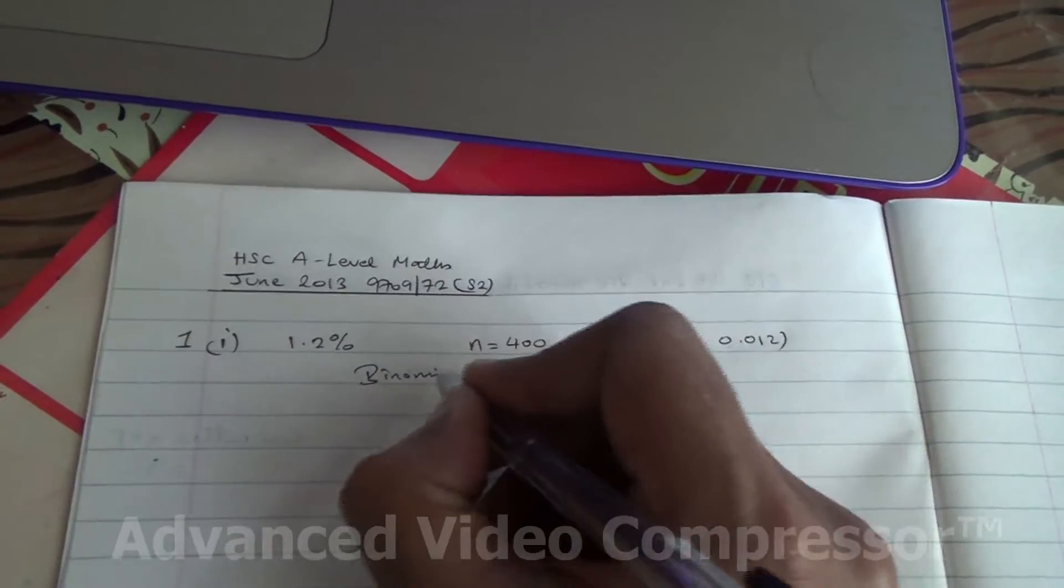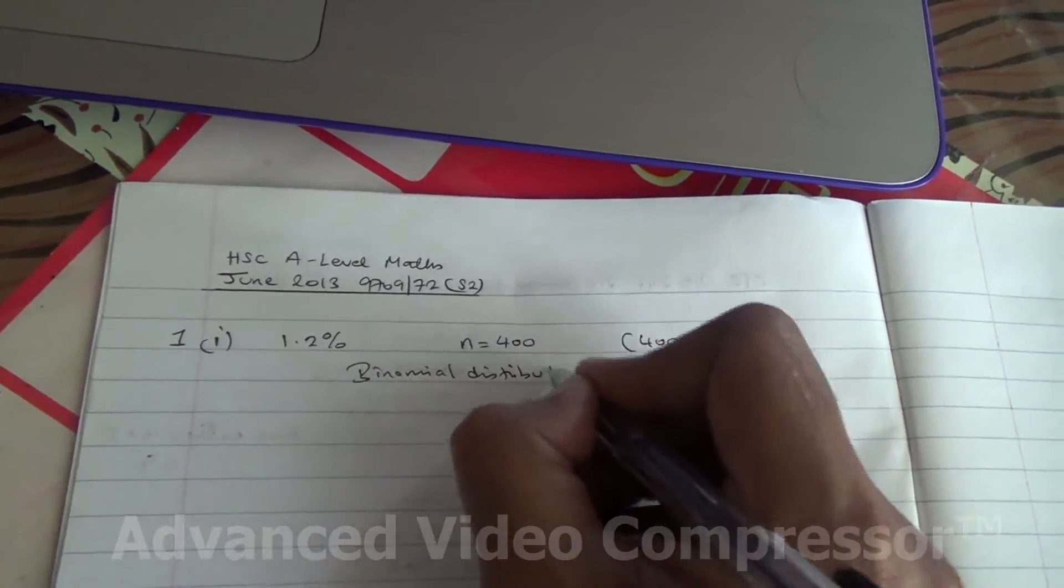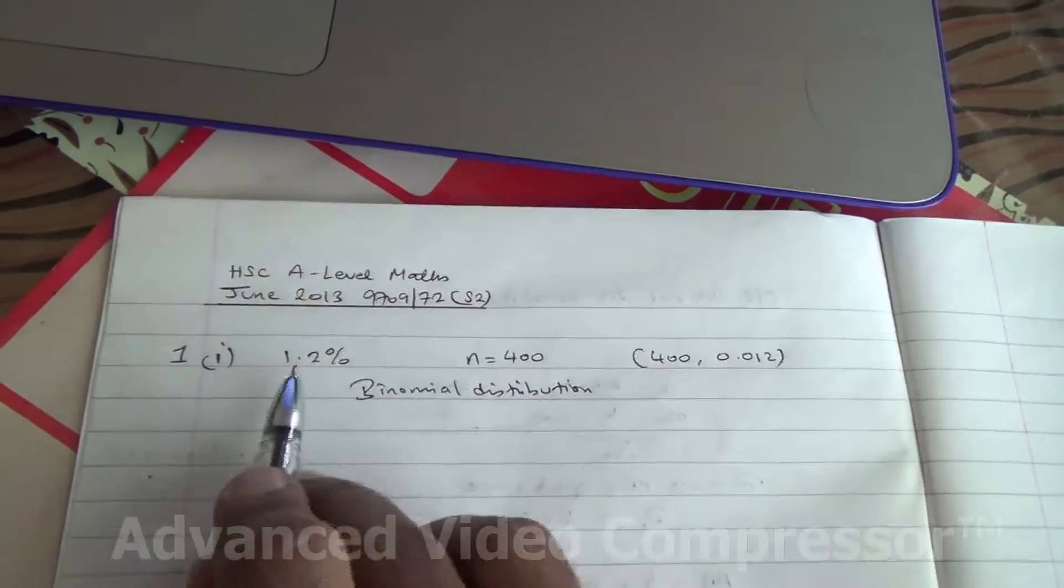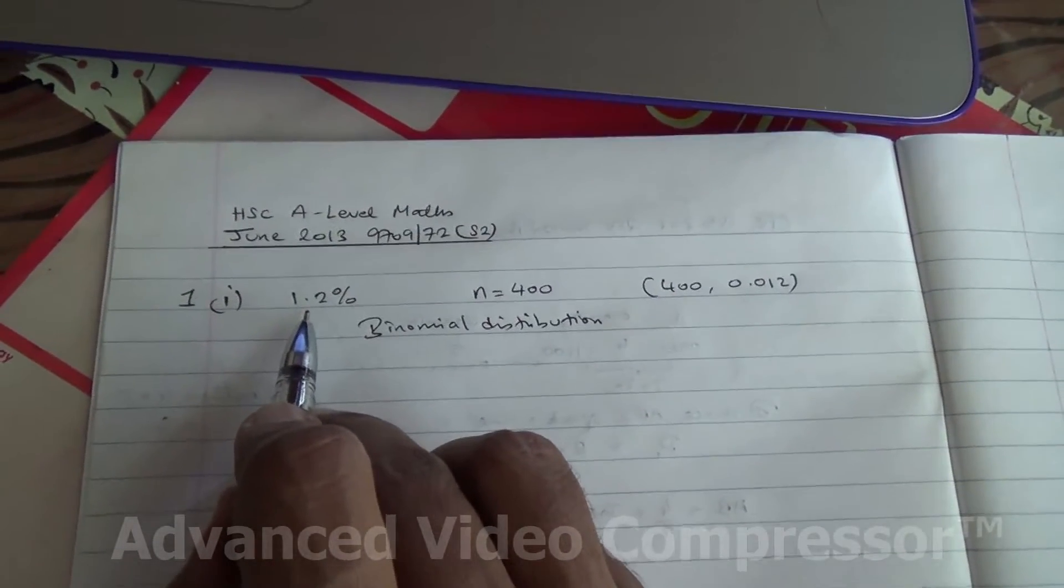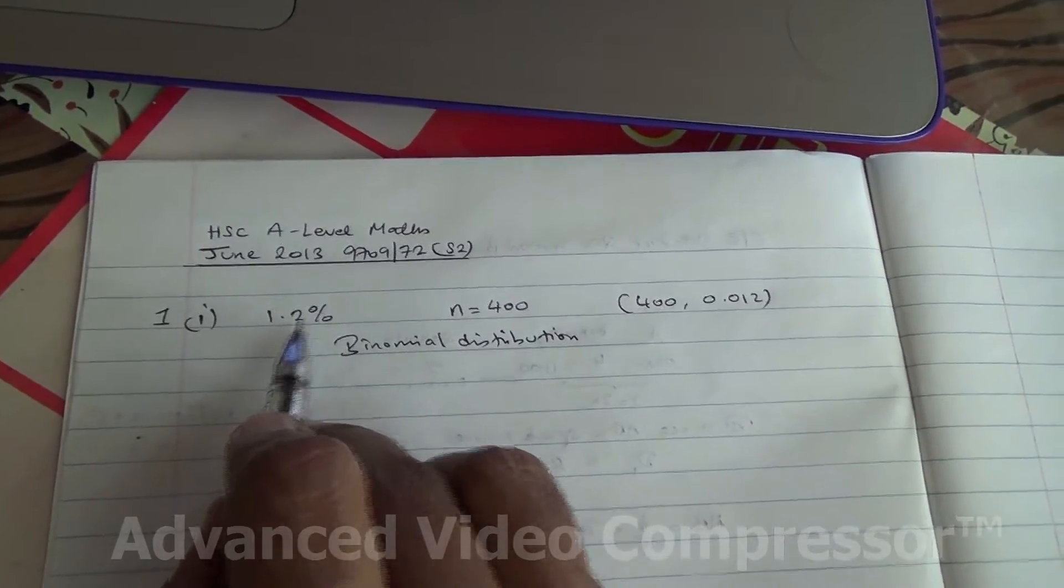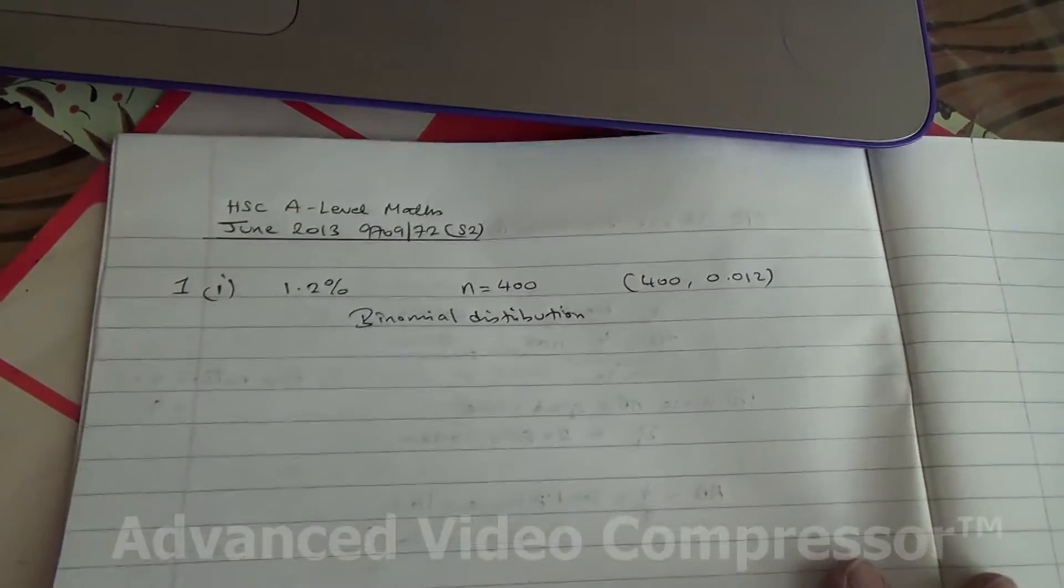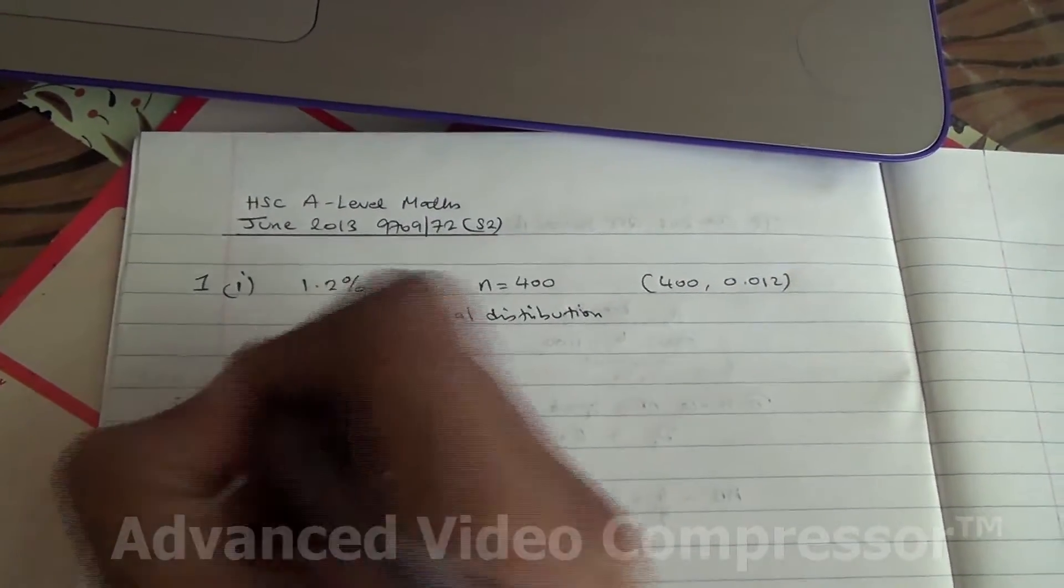Why is it a binomial distribution? Because there is a probability of success, 1.2% that the rod is going to be bent, and a possibility of failure that they are not going to be bent. And 400 is the limited number of trials. So that is a binomial distribution.